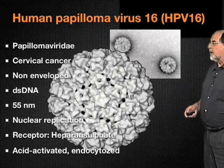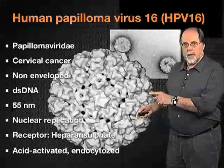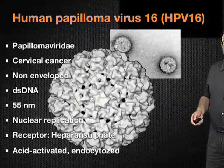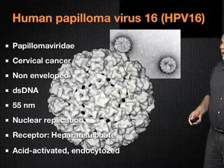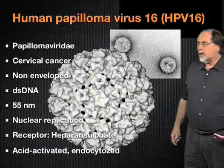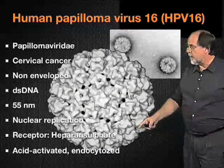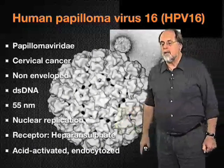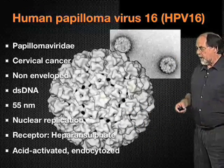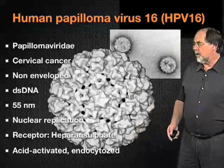Before finishing this section, I would like to talk a little bit about the surface behavior of this particular virus. It's the human papilloma virus 16, a major cause of cervical cancer. It's a DNA virus, non-enveloped virus, 55 nanometers in diameter, replicates in the nucleus. Receptors for this virus are not entirely clear except that they do use as an important component proteoglycan, heparin sulfates. The virus is acid activated and it is entering by endocytosis.